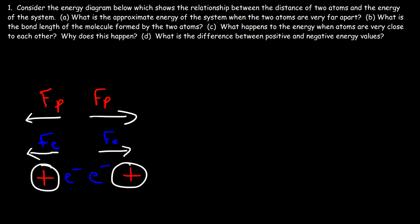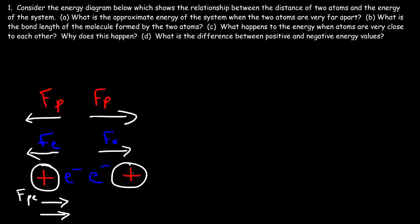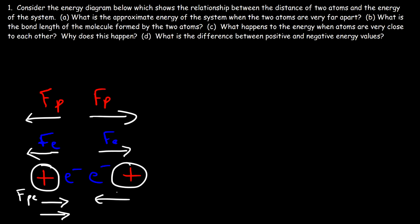There are also attractive forces: this proton is attracted to the electron on the other side and also attracted to the other electron. This proton-electron attraction pulls atoms toward each other. Similarly, the other proton is also attracted to both electrons. So in this configuration you have attractive forces and repulsive forces acting simultaneously on the atoms.